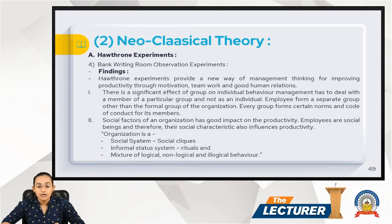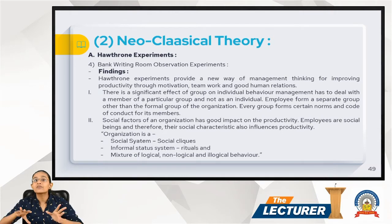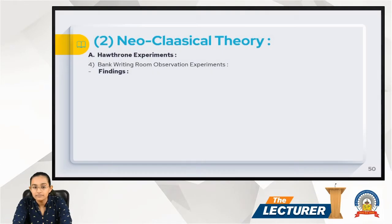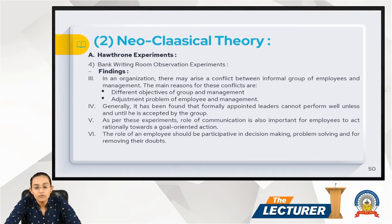Organizations include social cliques, informal status systems, rituals, and a mixture of logical, non-logical, and illogical behavior. In an organization, there is a conflict between the informal group of employees and management. The main reasons for this conflict are the different objectives of the group and management.